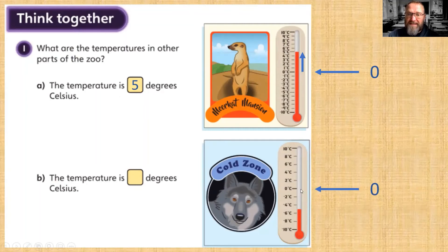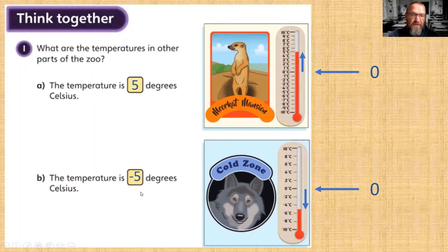In the Cold Zone, what's the first thing we do? Find that zero point. This time the reading is going to be a negative reading. We count down: two, four — it's past the four but not up to the six, so it's in between four and six. What number is between four and six? Five — but it's not positive five, it's negative five. So the answer is negative five degrees Celsius.